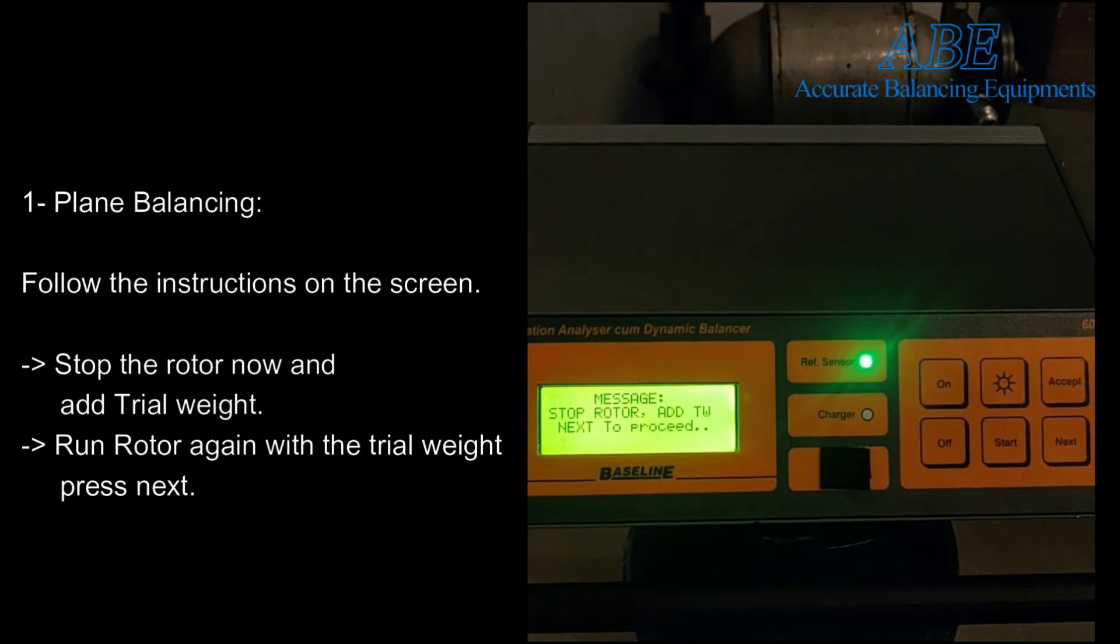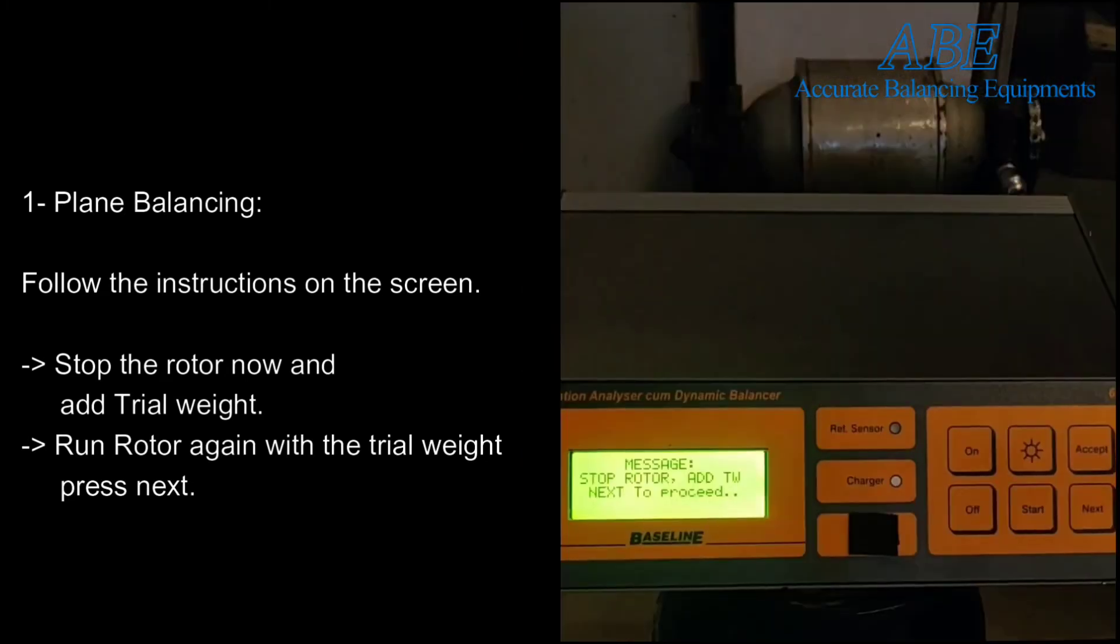A sharp auto-tracking filter synchronizes automatically to the rotational speed and filters out all extraneous vibrations. It is also possible to compare the overall and synchronous vibration readings to confirm unbalance as being the dominant cause of vibration.